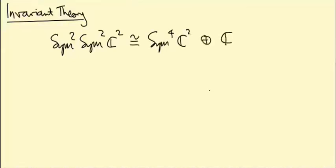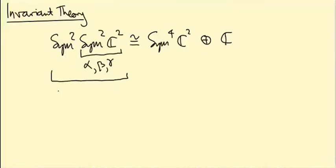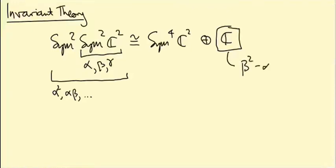As a recap, if Sym2(C²) had a basis alpha, beta, gamma, then Sym2 of Sym2 has a basis of things like alpha squared, alpha beta — quadratic expressions in these basis vectors. The trivial sub-representation I claimed at the end of the last video is spanned by beta squared minus alpha gamma.